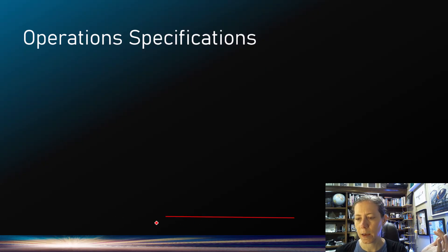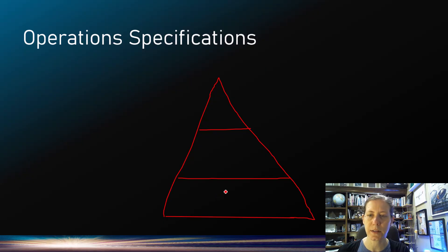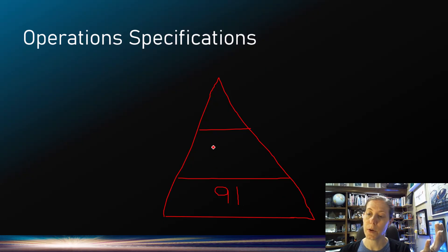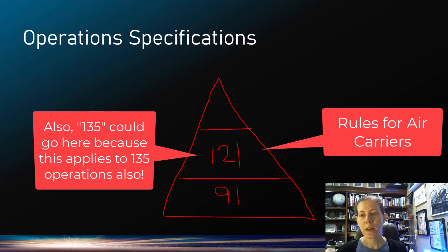I'm going to draw a pyramid on my slide. We have three levels of the pyramid when we think about operations specifications and how they fit in with the other parts of 14 CFR. From an operational perspective, on the bottom we have Part 91, which is where we have all the operating rules generally. Part 121 is another piece, covering air carriers conducting certain types of operations, and sometimes Part 121 rules trump Part 91 rules.